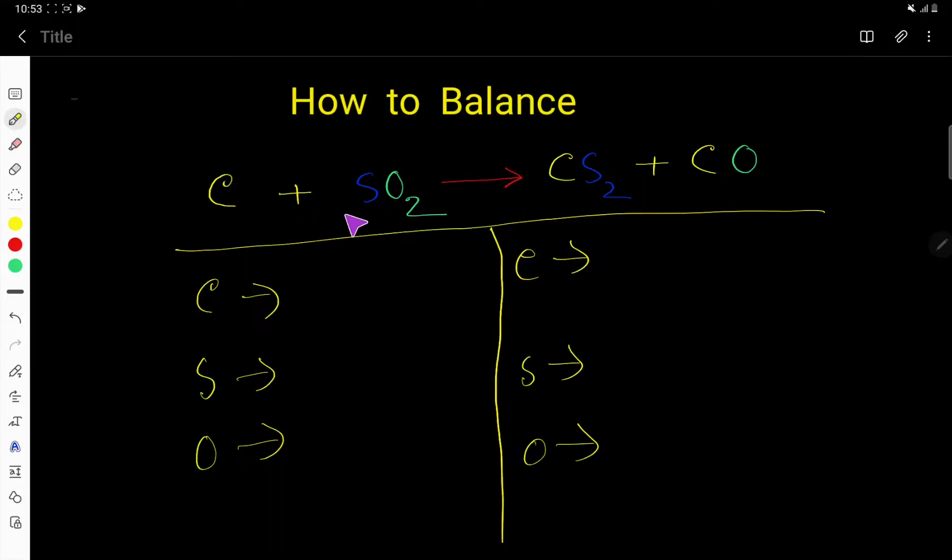How to balance C + SO₂ → CS₂ + CO. On the left-hand side, the number of carbon is 1, sulfur is 1, and oxygen is 2. On the right-hand side, carbon is 1, sulfur is 2, and carbon is also 1, giving us 2 total.